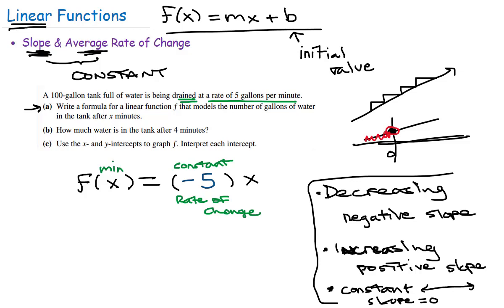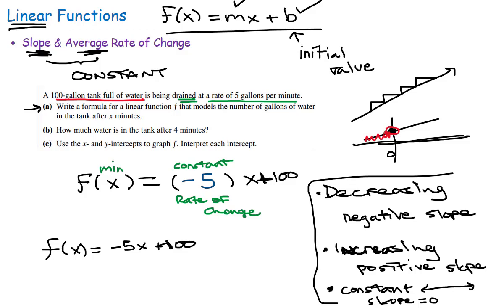So m is negative 5. Now we need b, the y-intercept or initial value. Reading back: a 100-gallon tank is full of water, so initially it has 100 gallons — b equals 100. Our function model for part A is f of x equals negative 5x plus 100. The negative 5 times x reflects that the rate of change is five gallons per minute, and x represents minutes.